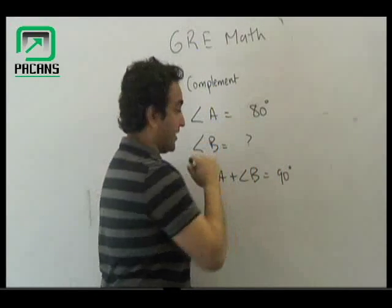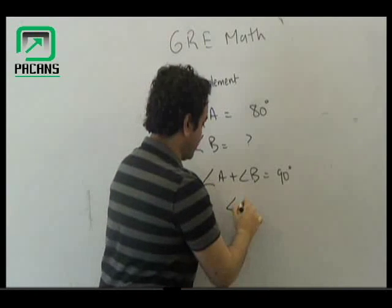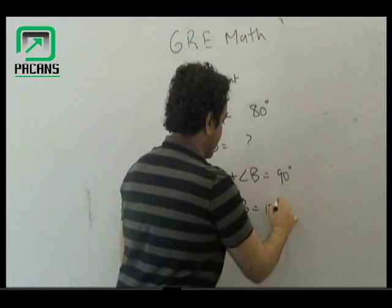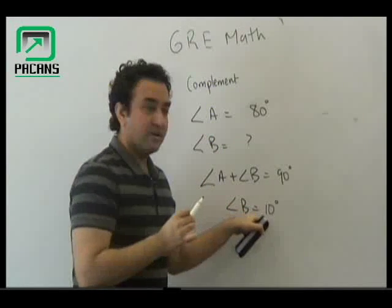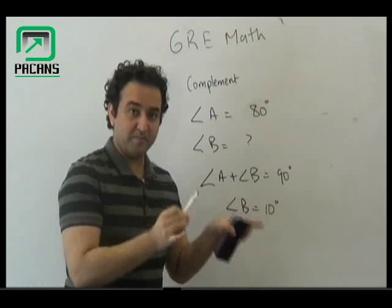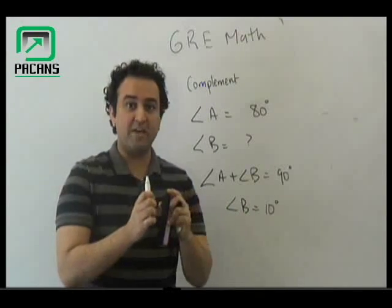We know angle A is 80 degrees, so angle B is going to be 10 degrees. So the complement of angle A is angle B and the measure of angle B is 10 degrees.